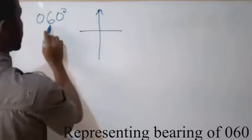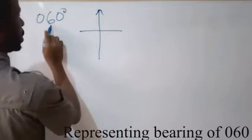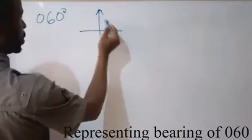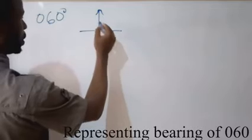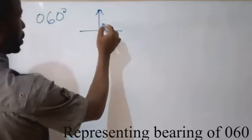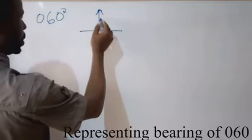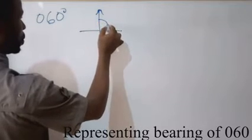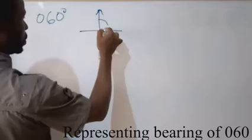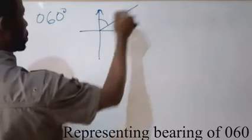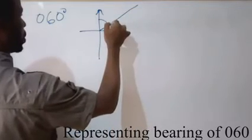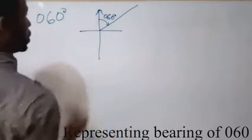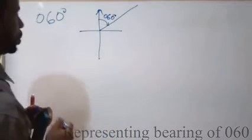So I want to represent 60 degrees. Since from north to east is 90, and 60 is in between 0 and 90, I move in this direction — something like this — and I stop. This angle here is 60 degrees.